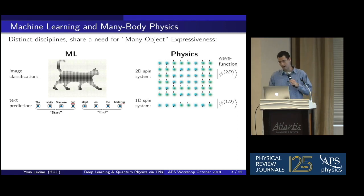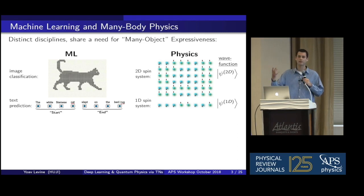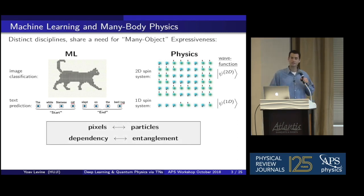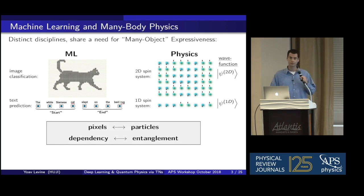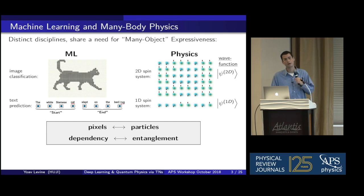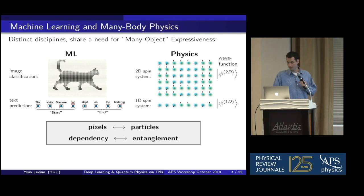In the physics domain, quantum wave functions encapsulate possibly very complex and convoluted dependencies between many quantum particles. In the analogies I'll be speaking about today, pixels will be analogous to particles — it's going to be formal, coming out of the math — and that will suggest a well-defined means of quantifying quantum entanglement as a means for quantifying the dependencies modeled by deep learning architectures with respect to their inputs.